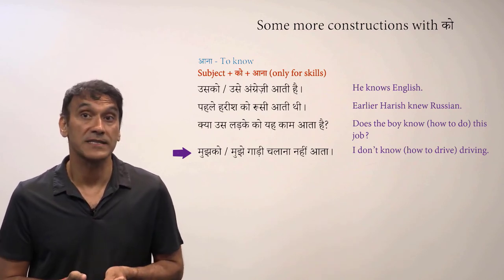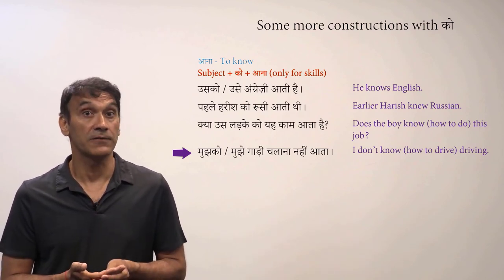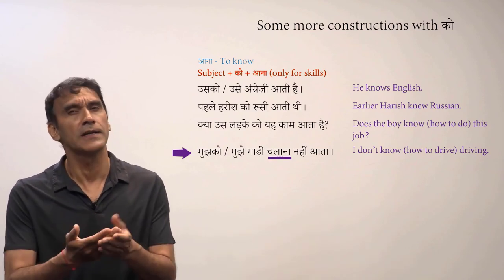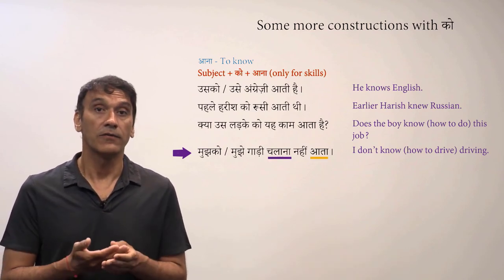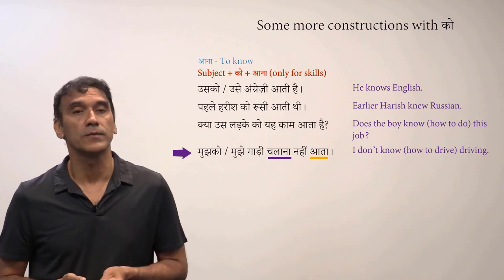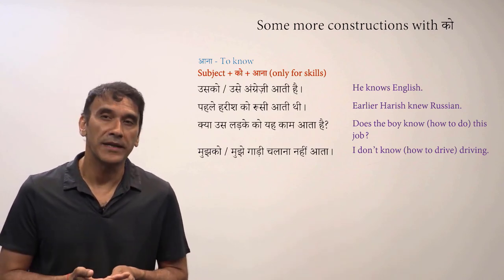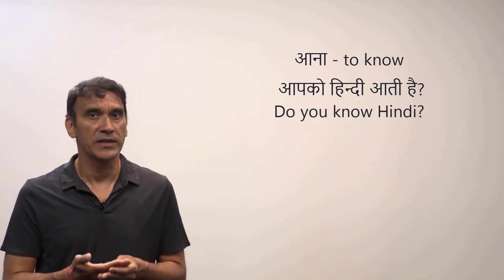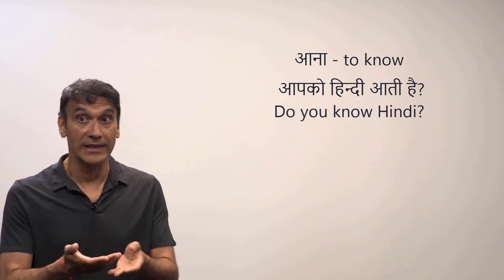All skills expressed by the infinitive form of a verb take the masculine form, because the infinitive is a masculine noun. For instance, 'gaadi chalana' (driving) is a masculine noun. The verb 'aana' in the meaning of 'to know' is very common — in fact, it's more common than 'janna.' Many people in India will ask you 'Aapko Hindi aati hai?' instead of 'Aap Hindi jaante hai?'